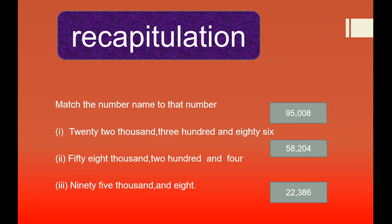Dear students, I have an activity for you. We will match the number name to that number. There are number names and numbers — we will join each number name to the correct number. The first one is twenty-two thousand, three hundred and eighty-six. We will check: the first number is ninety-five thousand and eight, the second one is fifty-eight thousand, two hundred and four, and the third one is twenty-two thousand, three hundred and eighty-six. So we join the first number name to the third number.